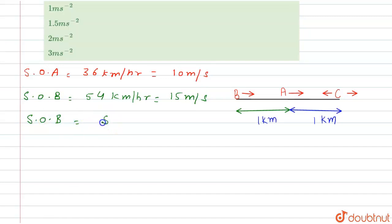Now, the relative speed of A with respect to C is 10 + 15 = 25 m/s.